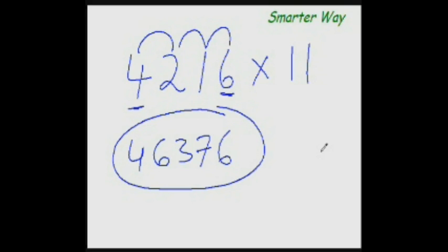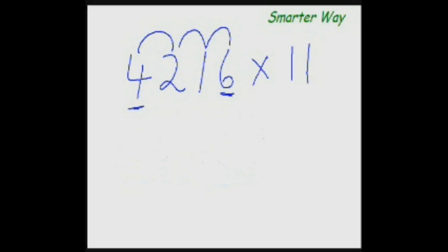So the most remarkable thing about this method is that we are getting the answer from left to right. That is the most significant digit first. Now the advantage of that is that immediately you can start saying the answer. If I give you this question, immediately you can start saying the answer would be 4, 6, 3, 7, 6. The other person would be amazed. They're thinking, my god, you are a genius.